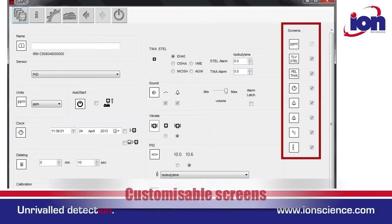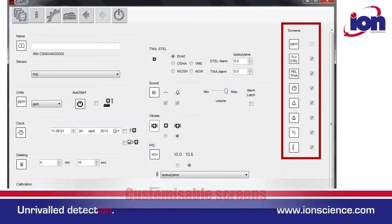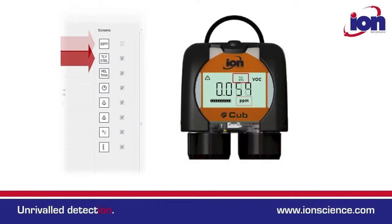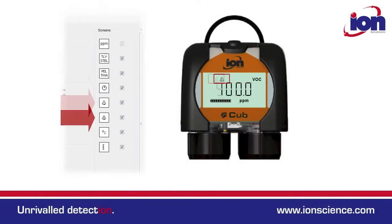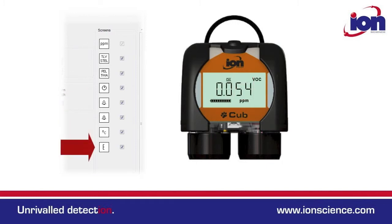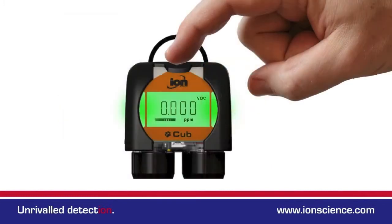The Cub can be customised to display the screens that are most important to you. Only the functions you select on Cub PC will actually appear on your Cub instrument. To switch off, just press and hold the button while on the main screen.